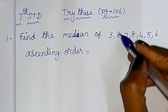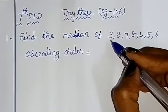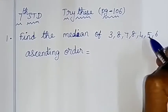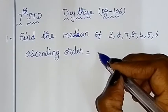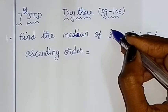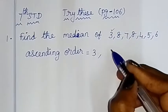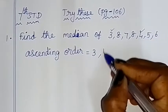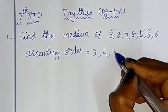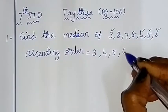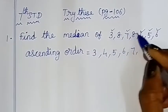Arranging in ascending order from smallest number: 3, 4, 5, 6, 7, 8, 8.